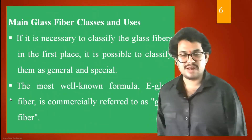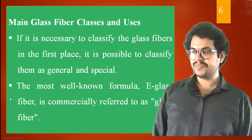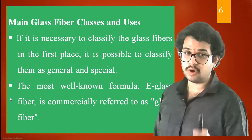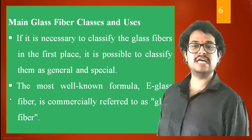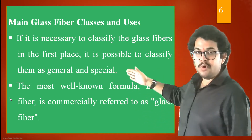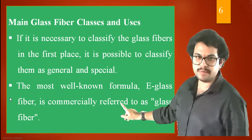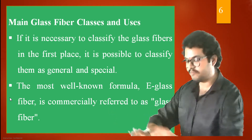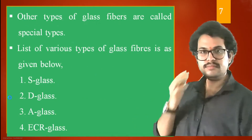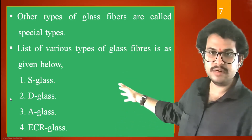The main glass fiber classes — how do we classify glass fibers and what are their uses? Glass fibers can be classified into two categories: general purpose and special purpose based on their purposes. The most well-known formula is E-glass — electrical glass or glass which can conduct electricity. E-glass fiber is commercially referred to as glass fiber, so whenever you use the term 'glass fiber' it generally represents an E-glass fiber.